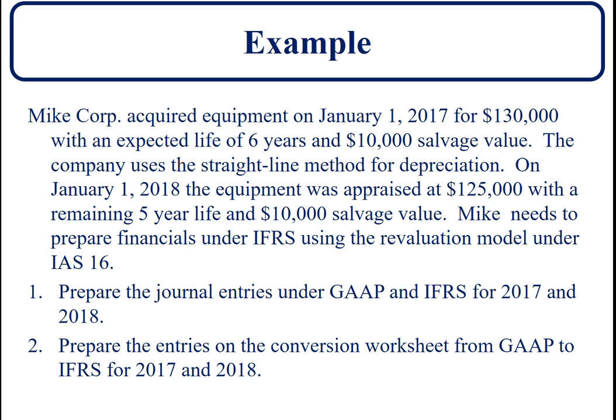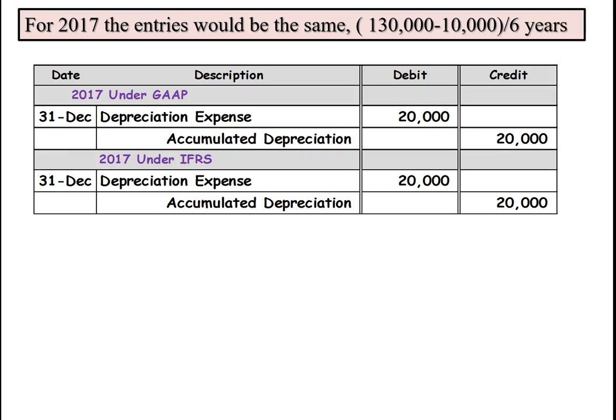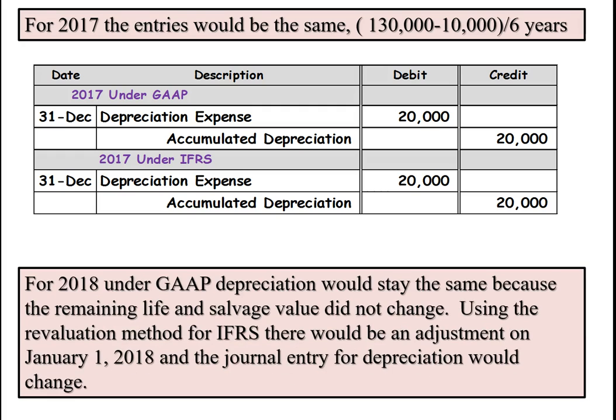We're going to look at the journal entries as they would be made under GAAP versus under the international standard for 2017 and 2018, and then we're going to show what the entries would be on the conversion worksheet to get us from GAAP to the international standard. For 2017, the entries would be the same — a depreciation expense of $20,000, calculated by taking the cost of $130,000 minus the salvage value divided by the six-year life — and it would be exactly the same under the international standard. It will change in 2018.